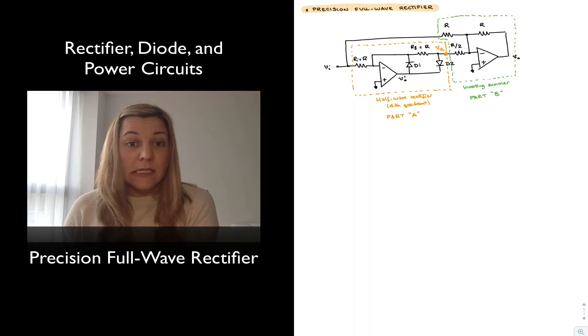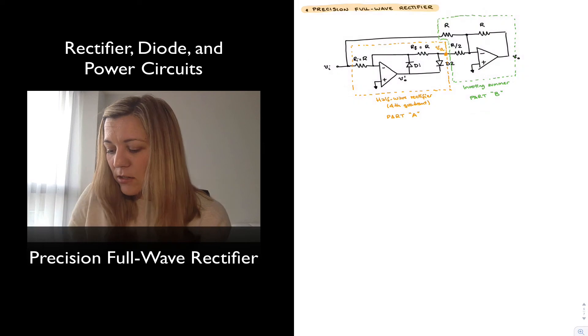So let's go ahead and get started on the analysis. And just to simplify things, we're going to analyze first part A and figure out what's the value of VA, the output of that first part, in terms of VIN. And then we're going to use that output signal as the input to our next stage and figure out what is the output out of that following stage.